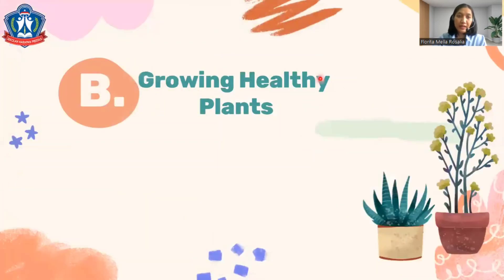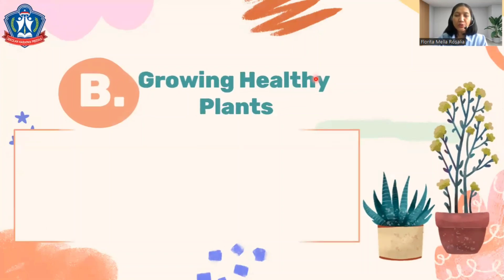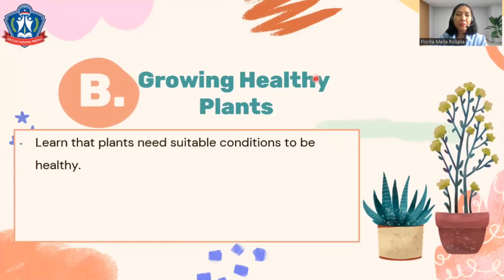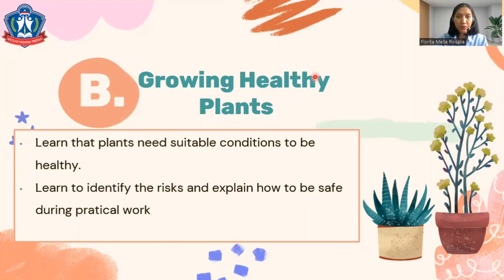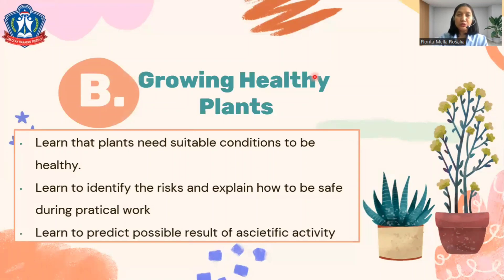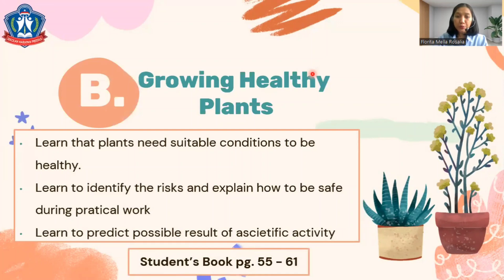Now let's continue to lesson B: growing healthy plants. In this lesson you are going to learn that plants need suitable conditions to be healthy, learn to identify the risks and explain how to be safe during practical work, and learn to predict possible results of a scientific activity. You can open the student's book page 55 until 61.